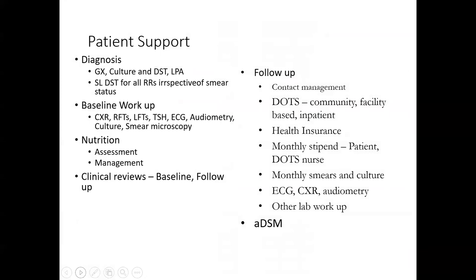In terms of patient support, what the TB program advocates for in the 2021 guidelines is scaling up access to diagnosis — GeneXpert, culture, DST, and LPA should be available to all eligible groups. We need to scale up access to baseline workup for DRTB patients, including chest X-rays, renal function tests, liver function tests, TSH, ECGs, cultures, smears, and so on. There is already a mechanism in place through the sub-county TB coordinator to access this for all patients.